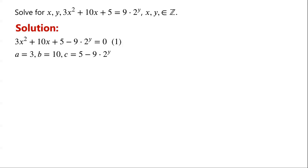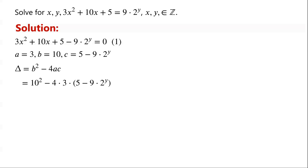The discriminant of the quadratic equation is equal to b squared minus 4ac, which is equal to 10 squared minus 4 times 3 times (5 minus 9 times 2 to the power of y). 10 squared minus 4 times 3 times 5 equals 100 minus 60.